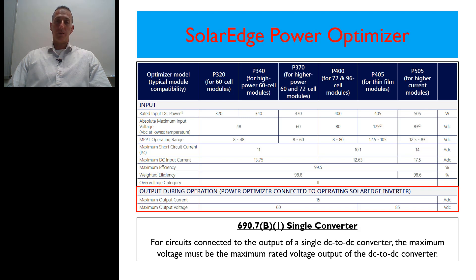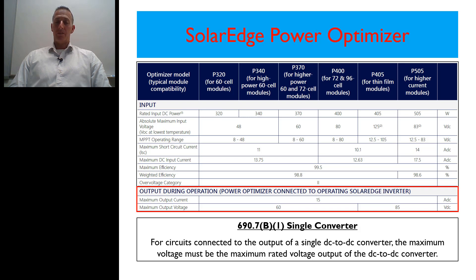Let's get started. In 690.7b1 of the 2017 National Electrical Code, it talks specifically and provides requirements for a single converter. It states that for circuits connected to the output of a single DC to DC converter, the maximum voltage must be the maximum rated voltage output of the DC to DC converter.